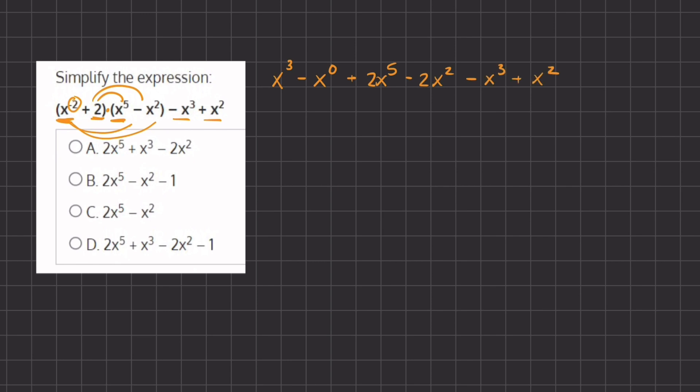Now we have to combine like terms and simplify. So here we have x to the power of 3 and negative x to the power of 3. So those two terms will be canceling out.